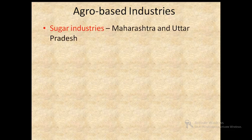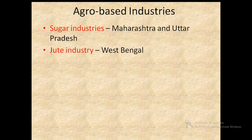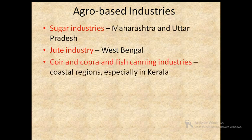Agro-based industries like cotton, jute and sugar are concentrated in the raw material producing areas. Sugar industries are found in Maharashtra and Uttar Pradesh. Jute industry is developed in West Bengal. Forest-based industries like paper, plywood, matches, resins, lac, etc., are located near forests in many states. Coir, copra and fish canning industries are found mostly in the coastal regions, especially in Kerala. Copra means dried coconut kernels from which oil is obtained.